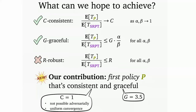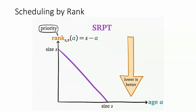The next property we want is graceful degradation: as the spread between alpha and beta gets bigger, we're within some constant times alpha/beta. We show we have a policy where c equals one — it converges to SRPT as error gets small — but also remains graceful, within a constant times alpha/beta, always regardless of alpha and beta.